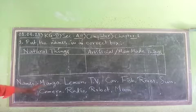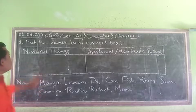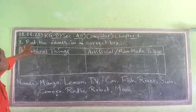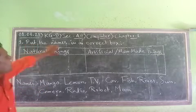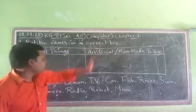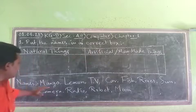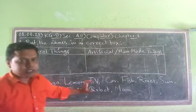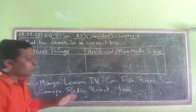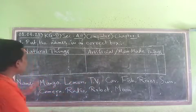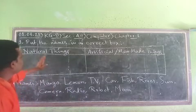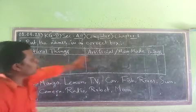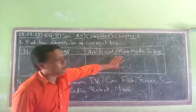Now what you have to do is written here: put the names in the correct box. So we have to read the names carefully and put each one in the correct box — either in the natural things box or in the man-made things box.